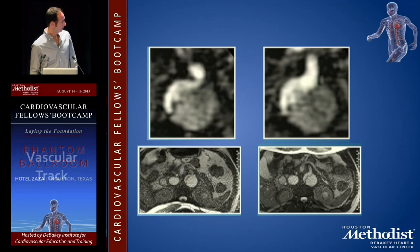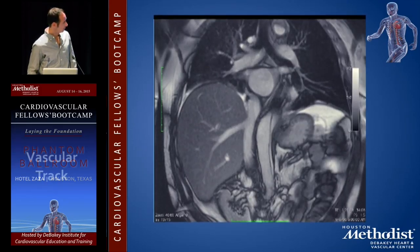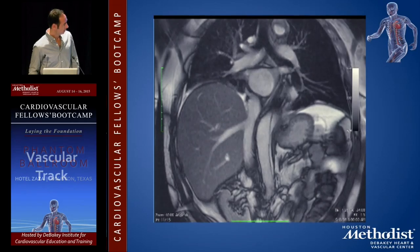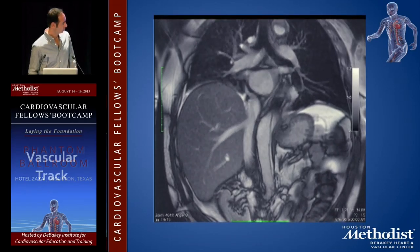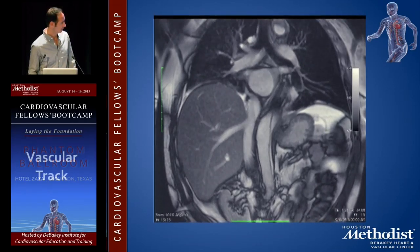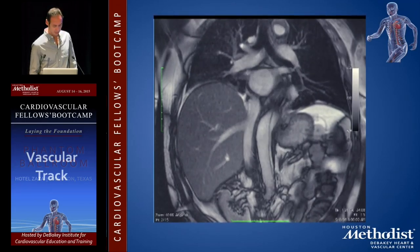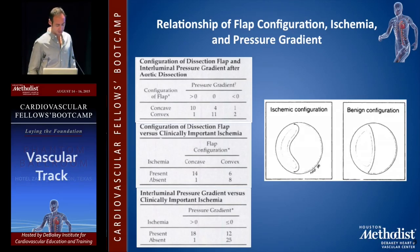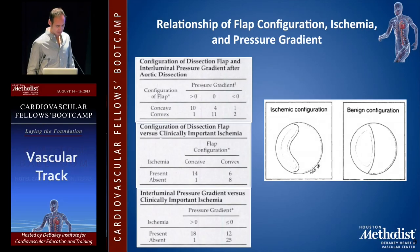The aorta is a dynamic organ, and you really see some huge changes with an aortic dissection — a very dynamic flap on an acute dissection. There are some different flap configurations, and based on some pressure measurements, there's essentially an ischemic and a benign configuration.